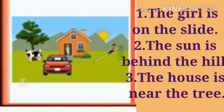Look at this picture also. We can see many things in this picture. The girl is on the slide. The sun is behind the hills. The house is near the tree. There is a cow under the tree. There is a car in front of the house. There is a boy in the house.